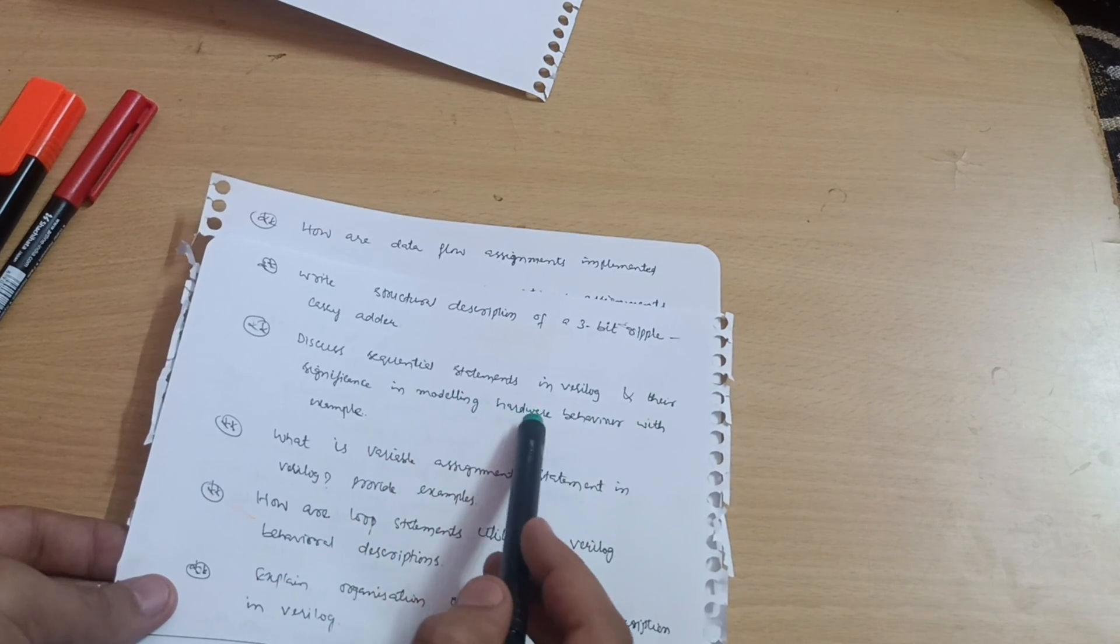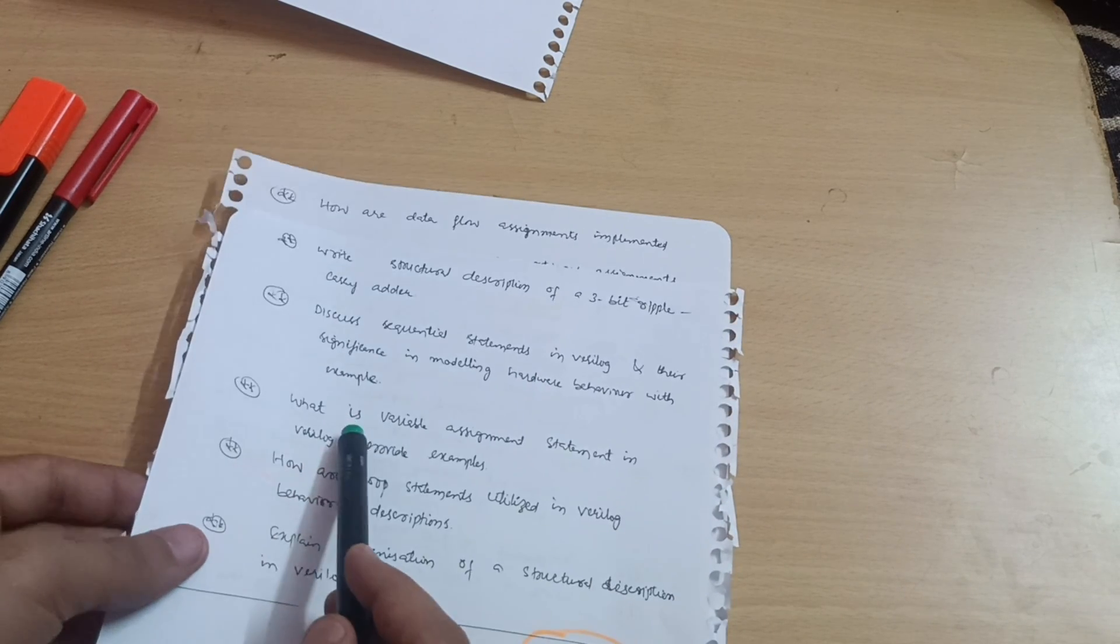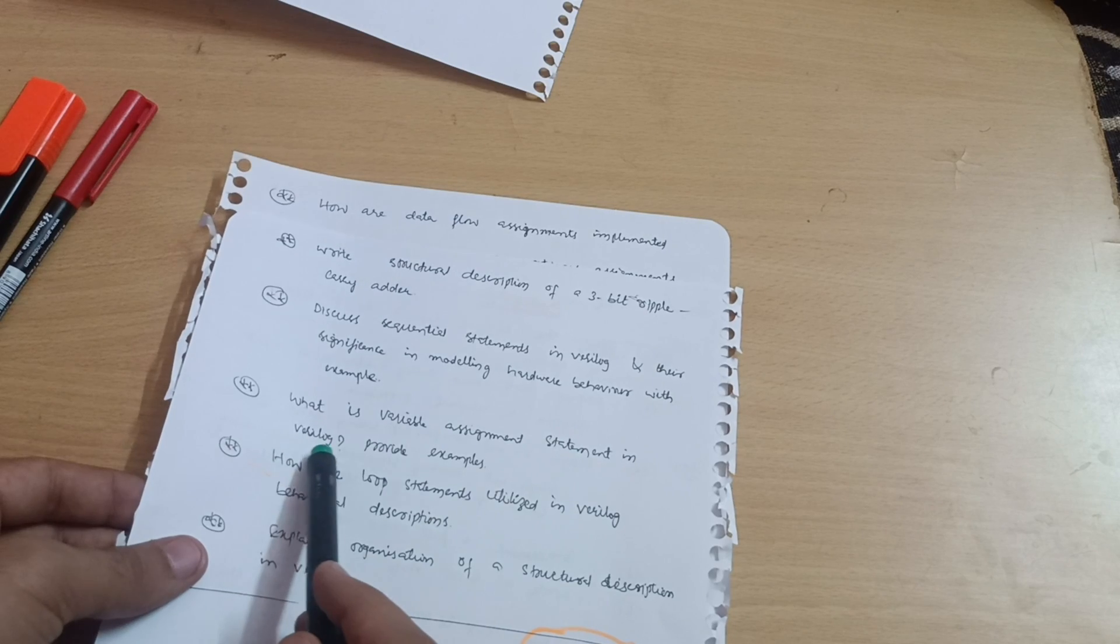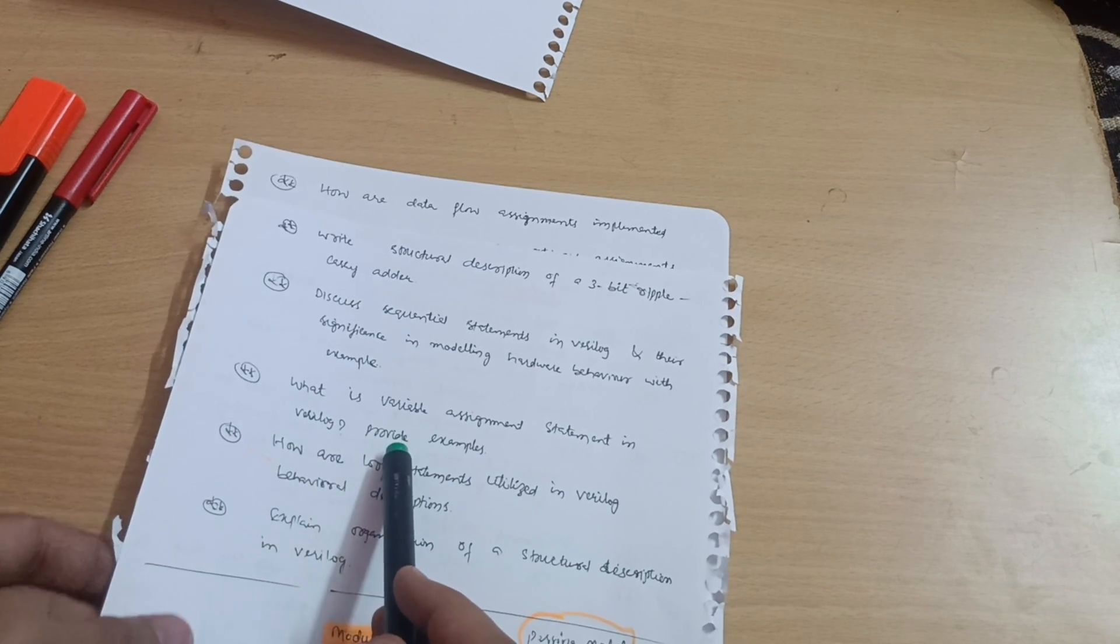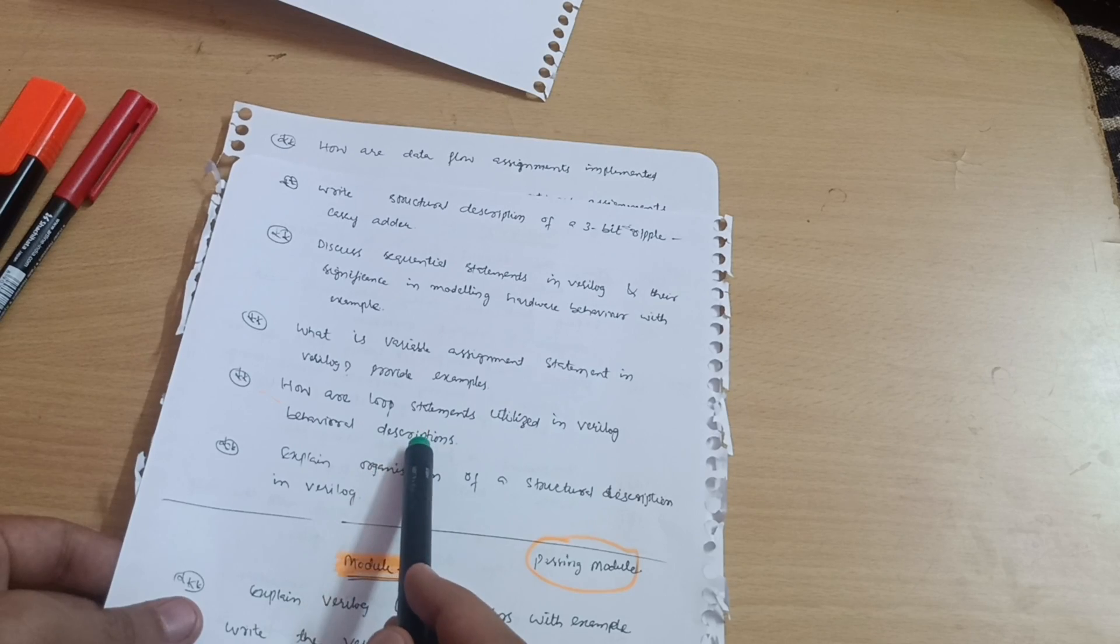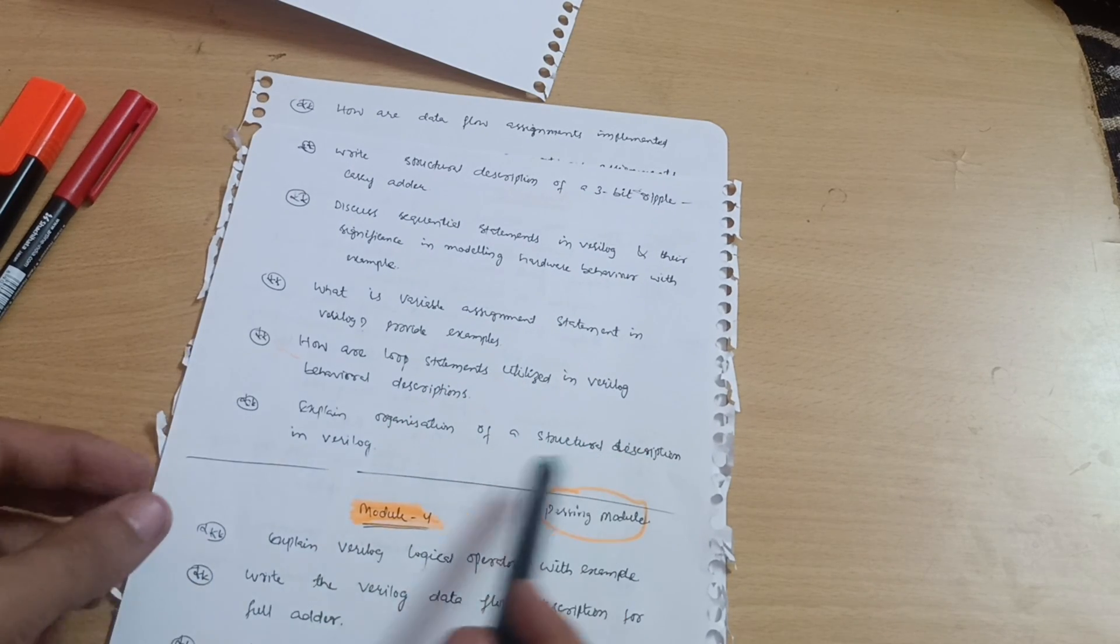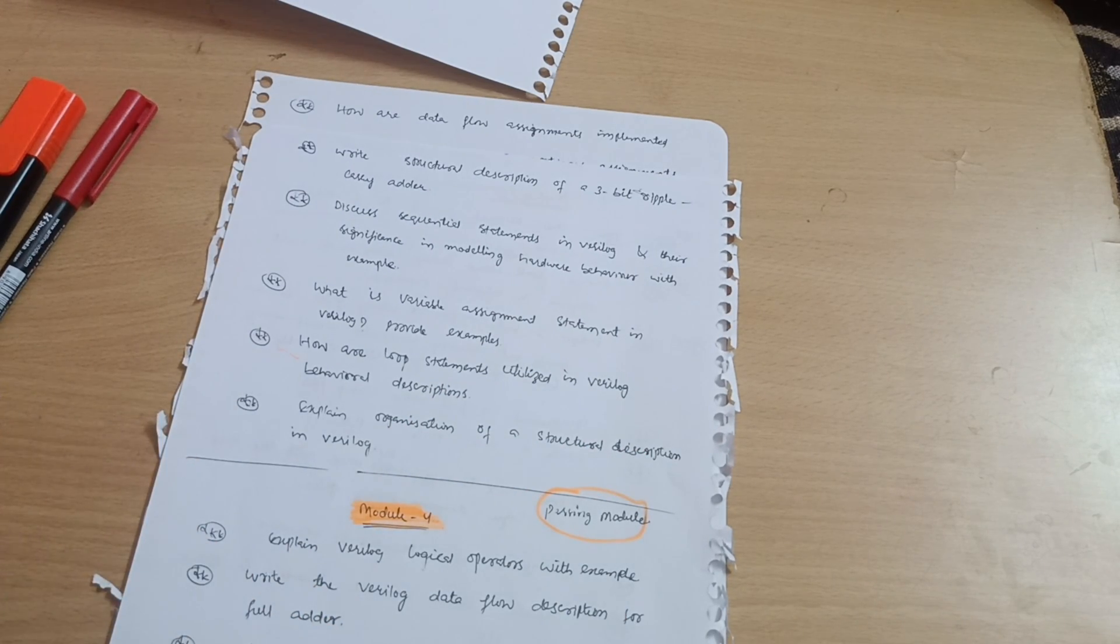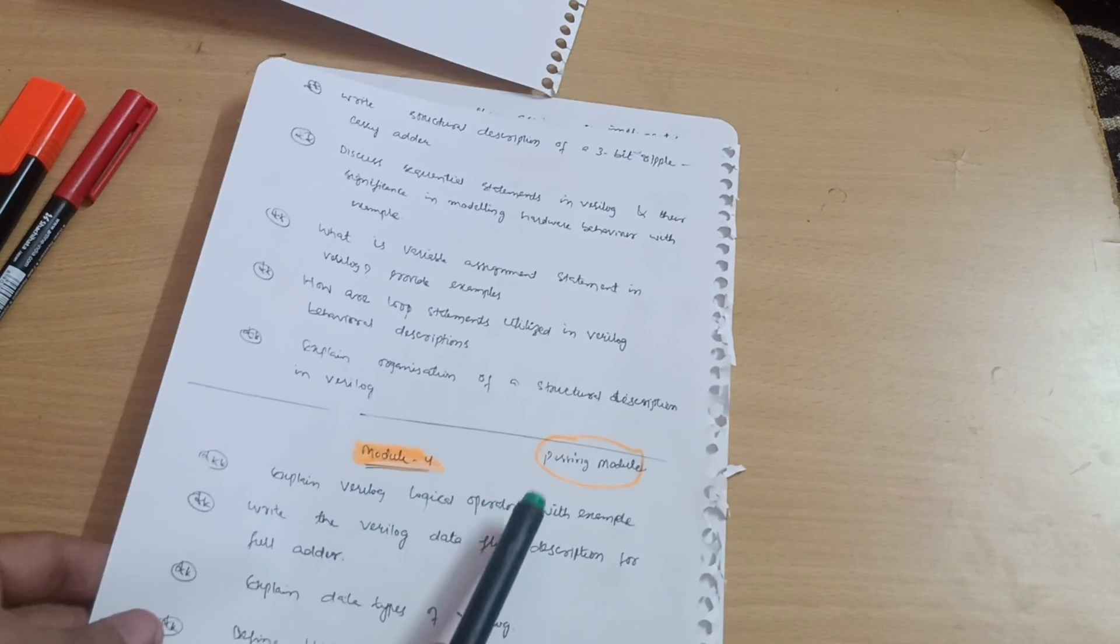Discuss sequential statements in Verilog and their significance in modeling hardware behavior with example. What is variable assignment statement in Verilog? Provide examples. How are loop statements utilized in Verilog behavioral descriptions? Explain organization of a structural description in Verilog. This is all about module fifth.